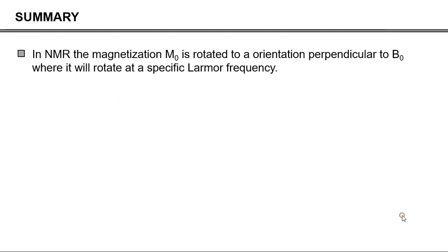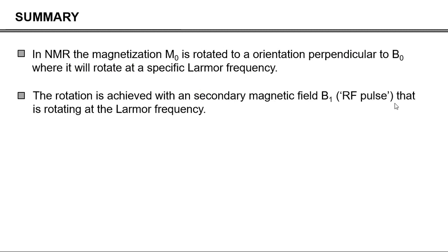So to wrap up: in NMR we play a little bit of a trick, in that we rotate the nuclear magnetization to the transverse plane, at which point it will start to rotate at a very specific and unique Larmor frequency. The rotation is achieved with a secondary magnetic field called B1, but it's also referred to as a radio frequency, or RF pulse, that is rotating at the same Larmor frequency.